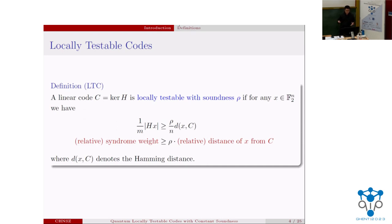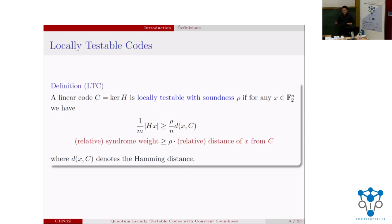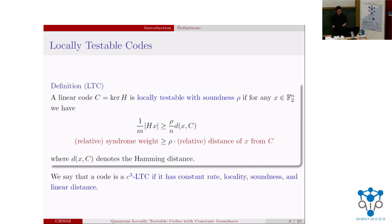When is a code locally testable? A code C is locally testable with soundness rho if for any n-bit word X, the relative syndrome weight — weight of the syndrome over M — is at least rho times the relative distance of X from the code space over N. This means if X is far from the code space, the number of violated checks is proportionally large, so you can sample random checks and easily detect a large error. We say a code is a C³ LTC if it has constant rate, locality, soundness, and linear distance — all the best properties you'd hope for.